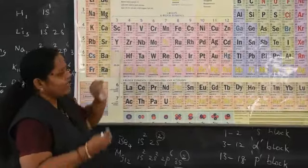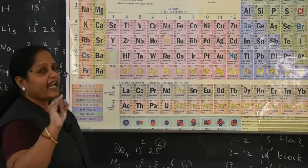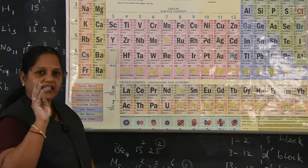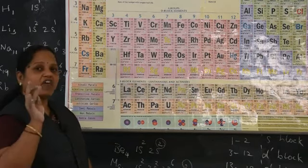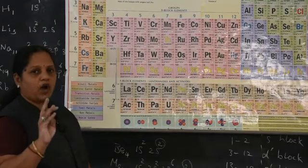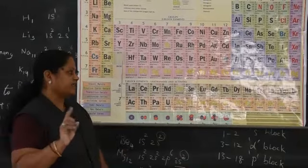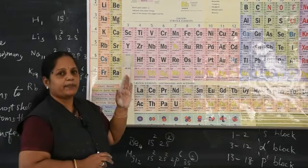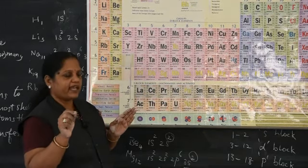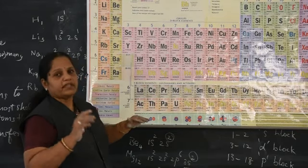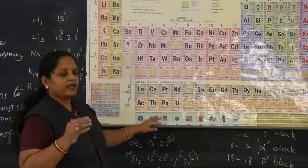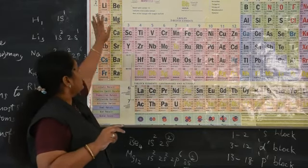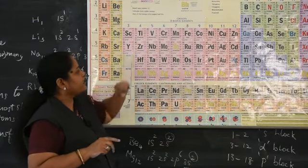So this is a brief introduction to the periodic table. All 118 elements are arranged in increasing order of atomic number and further classified into S block, P block, D block, and F block elements. Moving left to right gives periods (7 total); moving top to bottom gives groups (18 total). Each period contains metals, non-metals, and semi-metals.